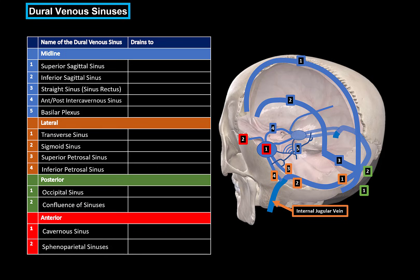The superior sagittal sinus is the largest dural sinus. It starts at the foramen cecum in the anterior part of the cranial cavity, goes along the superior margin of the falx cerebri, and drains into the confluence of sinuses. The inferior sagittal sinus goes along the inferior edge of the falx cerebri and receives tributaries mainly from the falx itself as well as some small veins from the medial surface of the cerebral hemispheres. The straight sinus drains the inferior sagittal sinus into the confluence of sinuses.